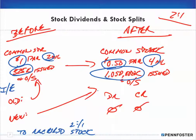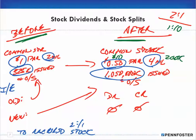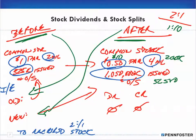For a reverse stock split, you record the before and after information in the same way. For a one-for-ten reverse split on the same example: par value becomes $10, authorized shares become 200,000, and issued and outstanding becomes 52,500 shares. The before information is the old data and the new information reflects the change. It's not rocket science — it's just changing the numbers.